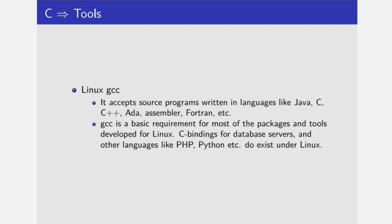Linux GCC accepts source programs written in languages like Java, C, C++, ADA, Assembler, Fortran, etc. GCC is also the basic requirement for most of the packages and tools developed for Linux. C bindings are available for database servers and other languages like PHP and Python, and they also exist under the Linux operating system.